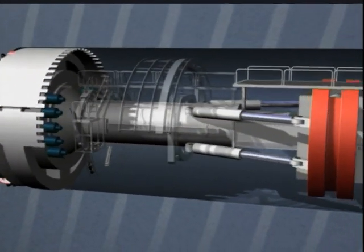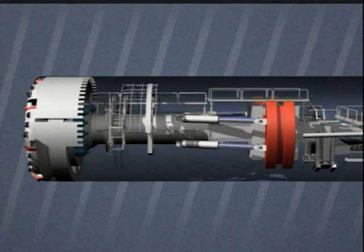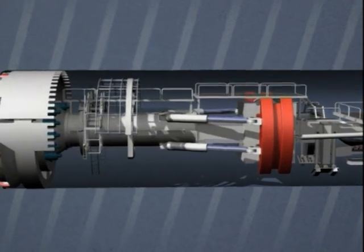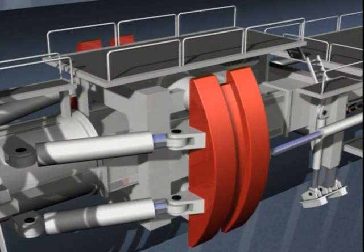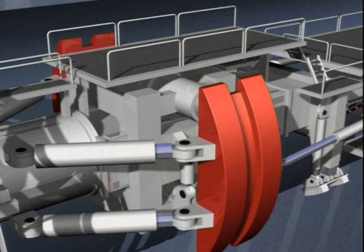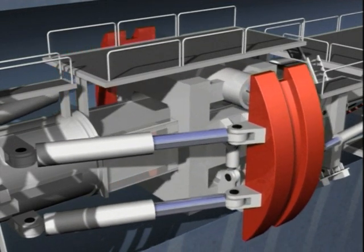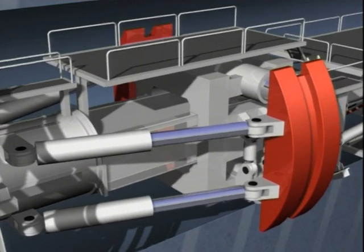When the TBM is working in hard rock, it uses a so-called gripper to press against the rock on both sides. Each stroke of the gripper takes the drive forward another 2 meters. The backup train moves forward with the boring machine.